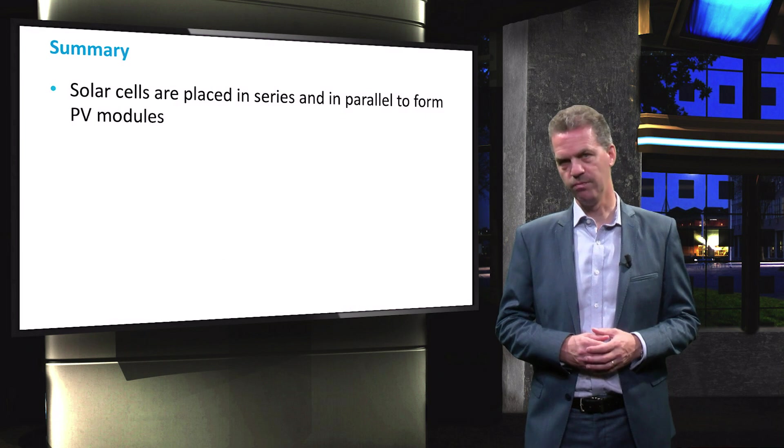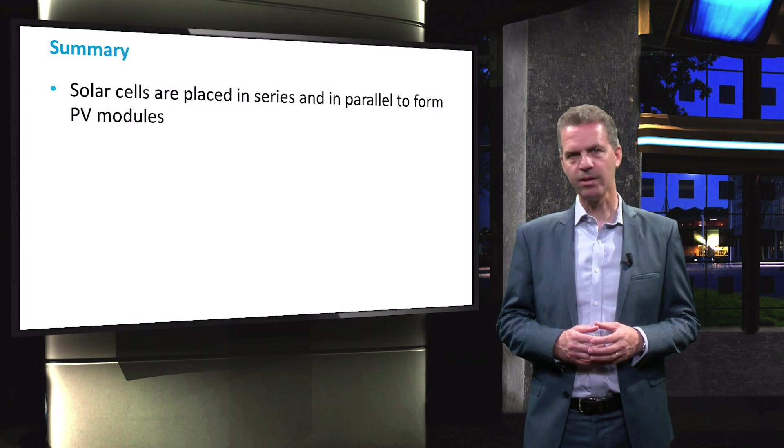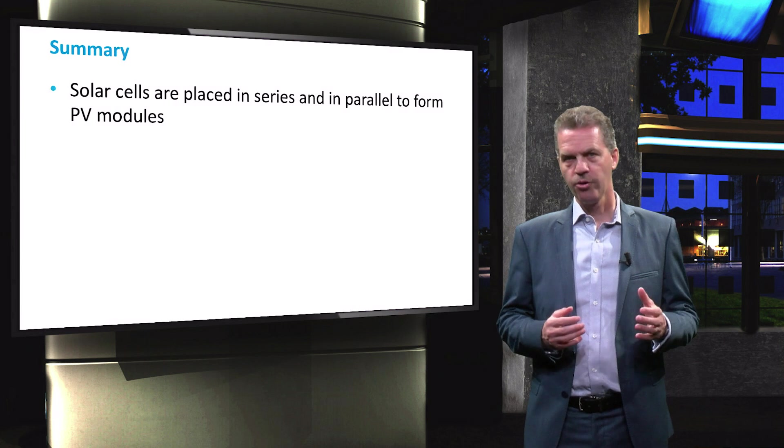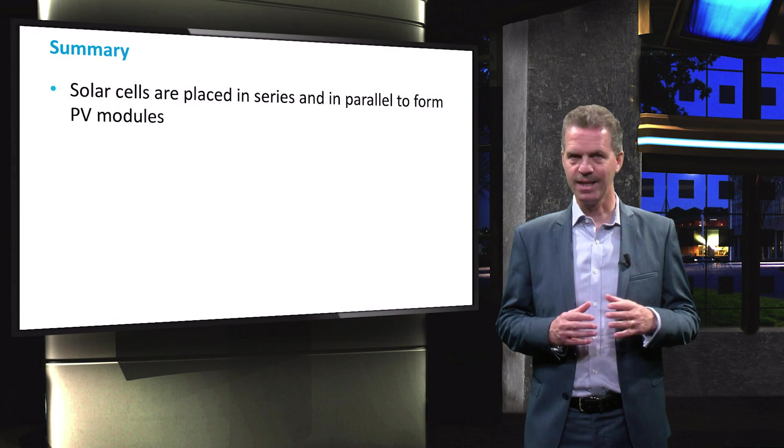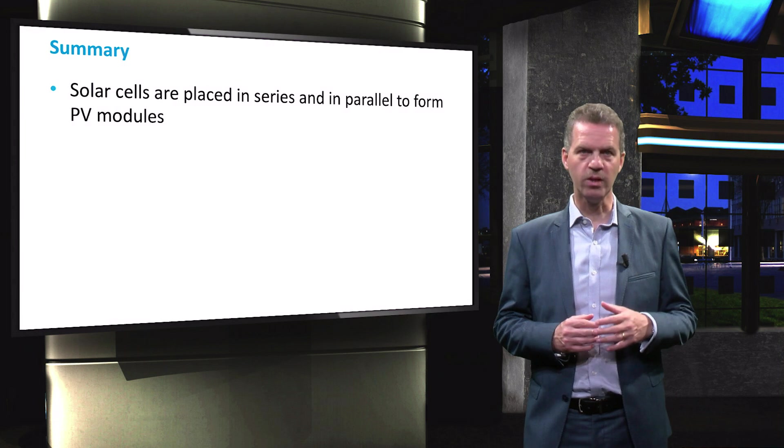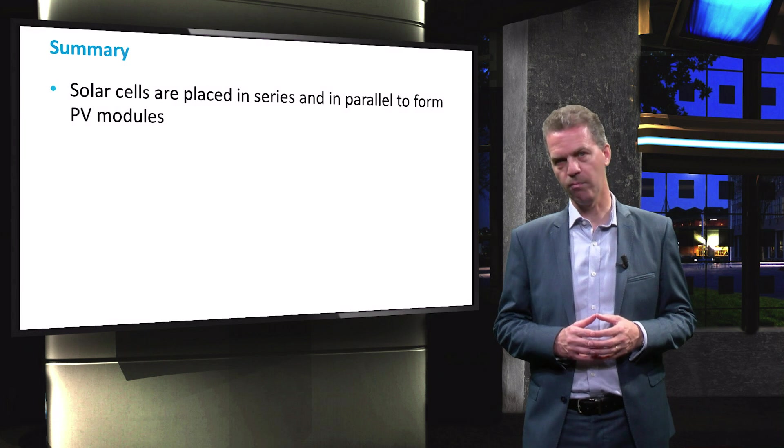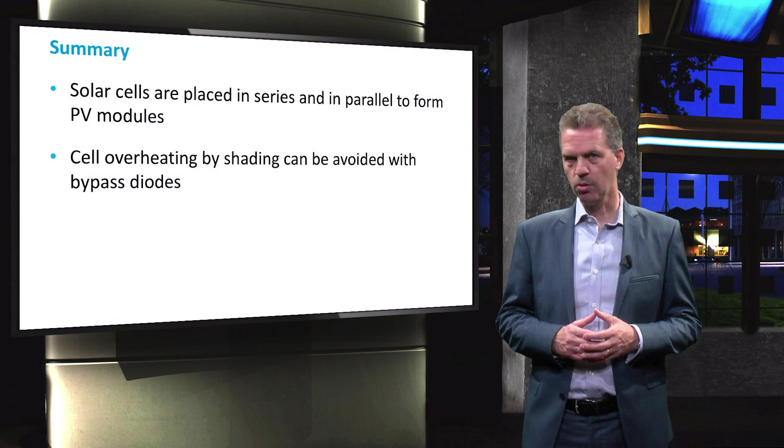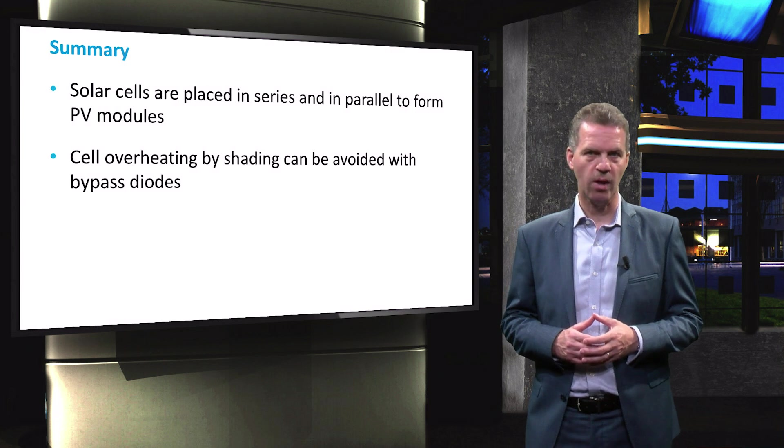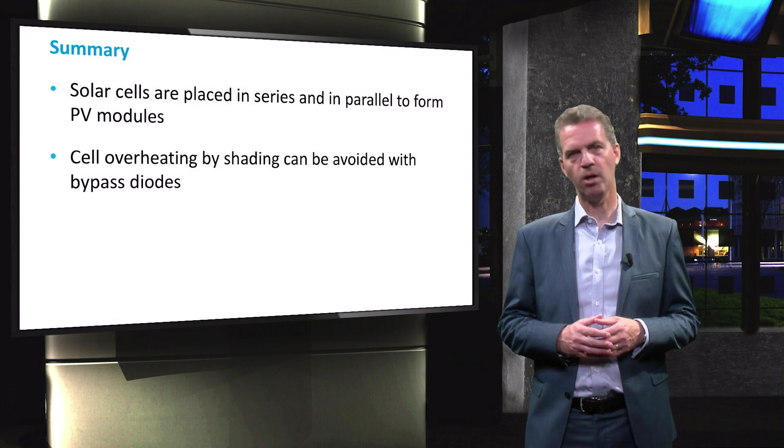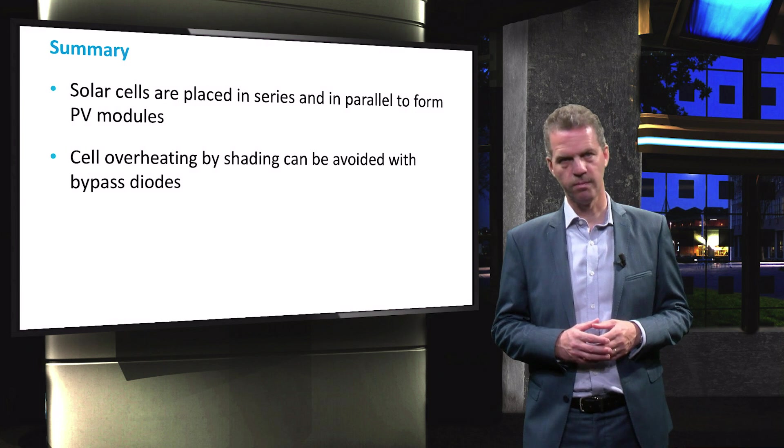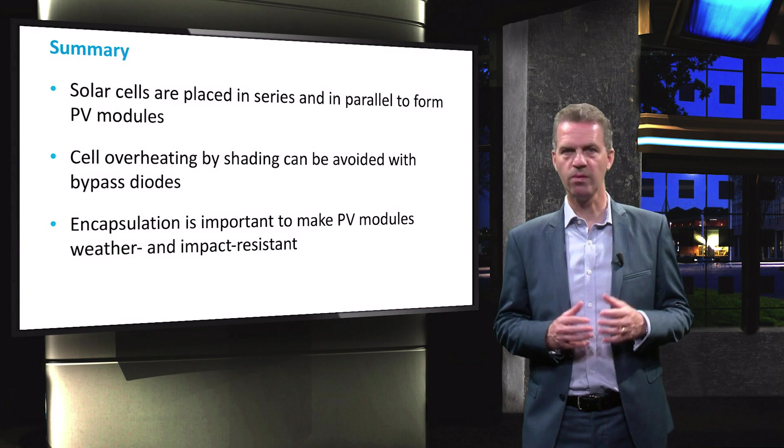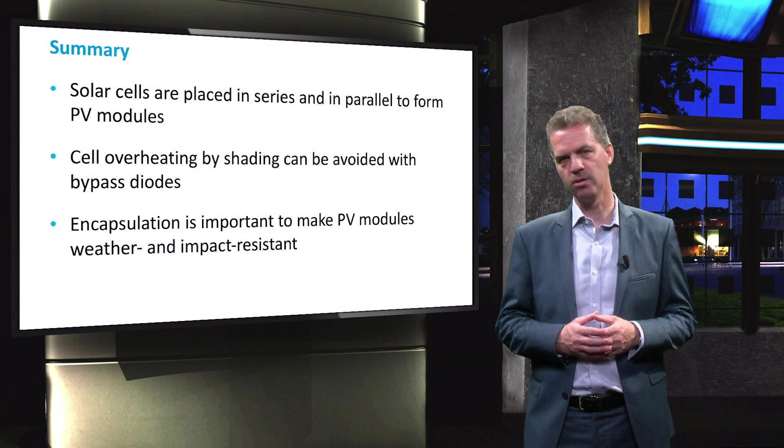To summarize this video, we have discussed the technical consideration going from cell level to module level. Solar cells will be placed in series or parallel connection to increase either the voltage or current output of the module respectively. When the module is installed outside, problems caused by shading are addressed and can be prevented by the use of bypass diodes. And finally, encapsulation of the solar cells is important to improve the weather and impact resistance of the module.